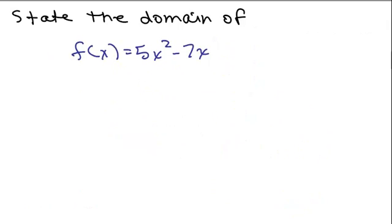So here's the first one. State the domain of f of x equals 5x squared minus 7x. Basically, the question is, what are the values that you can replace x with so that you get a real number?